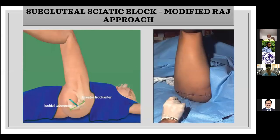In some patients, because of fractures or severe pain, it may not be possible to turn them into lateral position for the subgluteal sciatic nerve block. In these patients, it is good to do the modified Raj approach. The lower limb is flexed at the hip and knee. You draw a line connecting the ischial tuberosity medially to the greater trochanter laterally, and at the midpoint you place the needle tilted medially to make contact with the sciatic nerve.